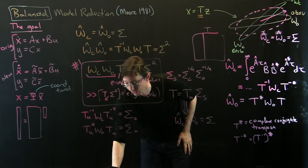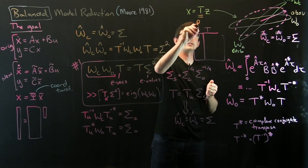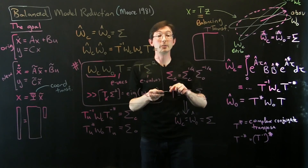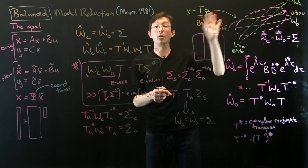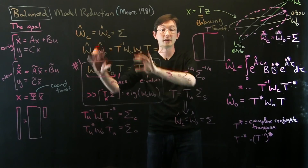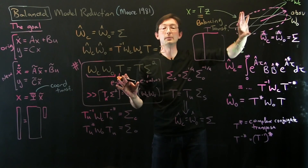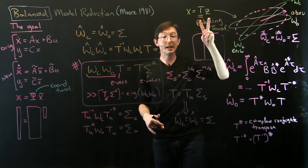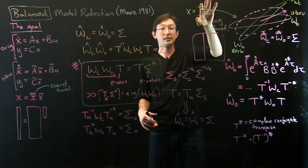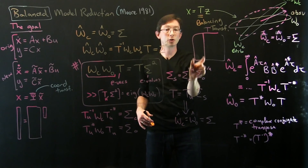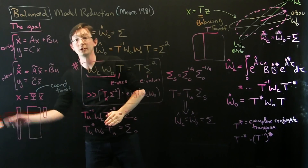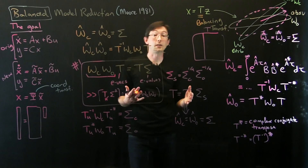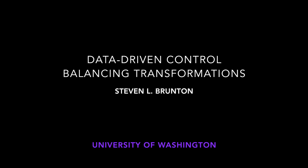This is called the balancing transformation — really important. Next we're going to code this up in MATLAB to convince you there's no magic and that the eigendecomposition and balancing transformation work. The second thing we're going to do is use this balancing transformation — a square matrix — and truncate all but the first R columns to get a reduced-order model. That's what Moore did, and that's what we're going to do next.